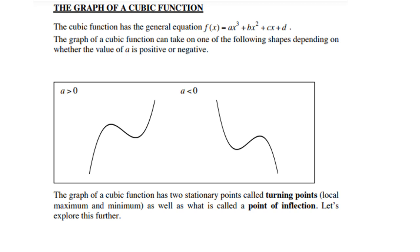If a is positive, that means the value of x³ is positive, and the graph will behave from left: down, then up. If a is negative, it will behave up, then down. Please take note there are two turning points — but more on this later on.